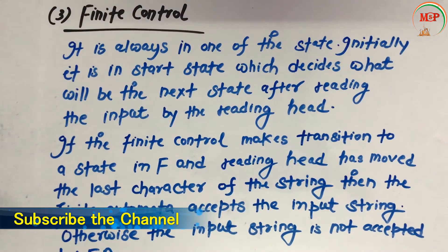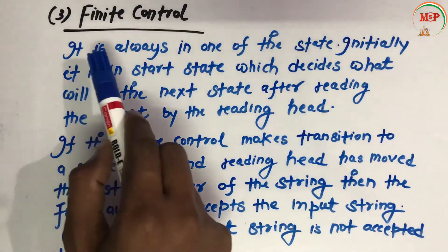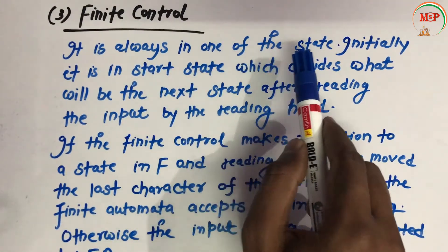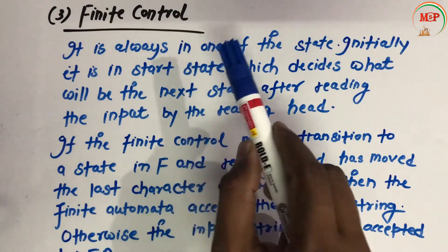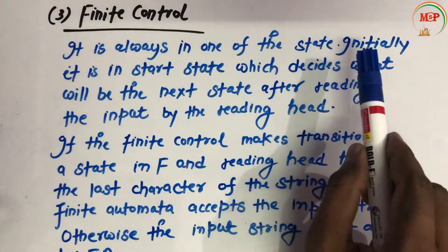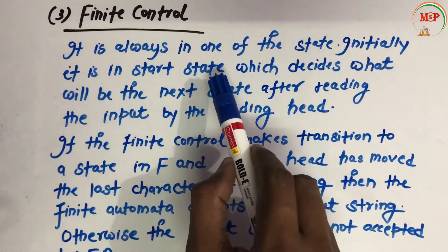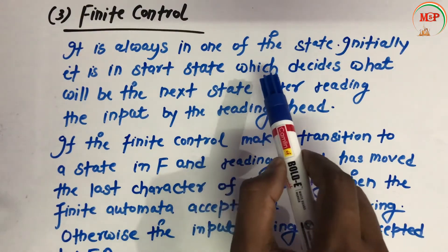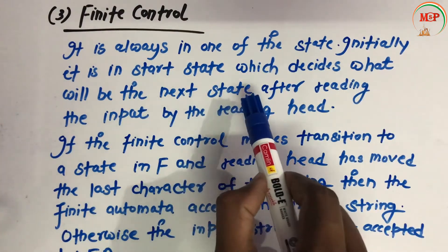Now let's see the third definition — finite control. The finite control is always in one of the states. Initially it is in the start state, which decides what will be the next state.